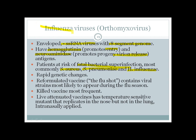Influenza viruses rapidly change their genetics, which can cause epidemics or pandemics — that's why vaccination is required each flu season. The flu shot contains the most likely viral strain for that season and the most frequent vaccine is a killed vaccine. There are also live attenuated vaccines applied intranasally — these are temperature-sensitive strains that replicate in the nose but not the lung.